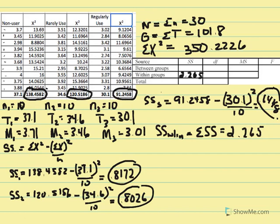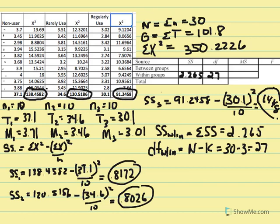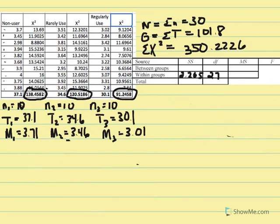Now we calculate degrees of freedom within: N minus k equals 30 minus 3 equals 27. We enter 27 into the table. Next, we'll calculate SS total — the calculations for SS between are more extensive, so we'll use SS total and then subtract.